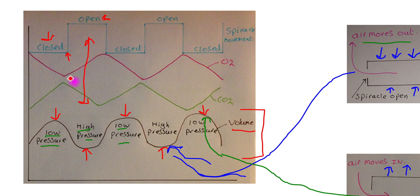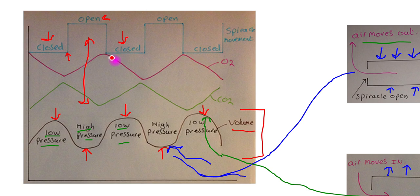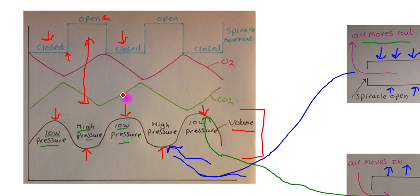The insect now has a fresh supply of oxygen and has expelled its carbon dioxide. Once that has happened, the spiracle closes and the cycle repeats. The insect uses the new oxygen for respiration, so the oxygen level reduces again and carbon dioxide increases. This second phase represents gas exchange occurring between the respiring cells and the tracheoles — the gas exchange surface — while the spiracles are closed.